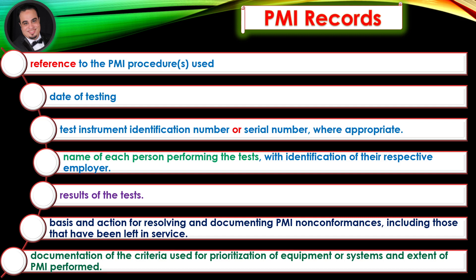PMI records should also include results of the tests, basis and action for resolving and documenting PMI nonconformances including those that have been left in service, and documentation of the criteria used for prioritization of equipment or systems and extent of PMI performed.